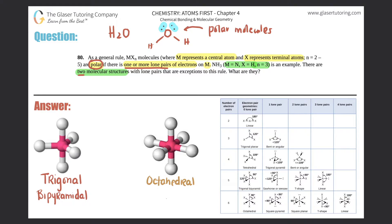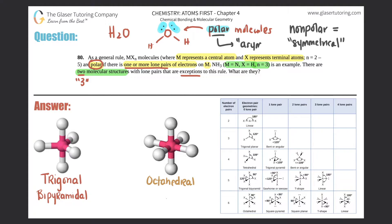NH3 and H2O are both examples of polar molecules with lone pairs. However, there are exceptions — and actually three molecular structures that could be exceptions, not just two. These exceptions would have to be non-polar, meaning the entire molecule is symmetrical, as opposed to polar molecules which are asymmetrical.